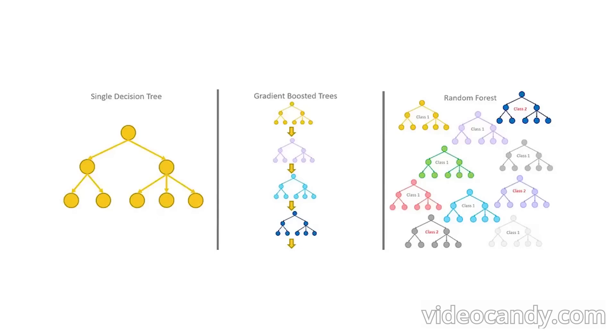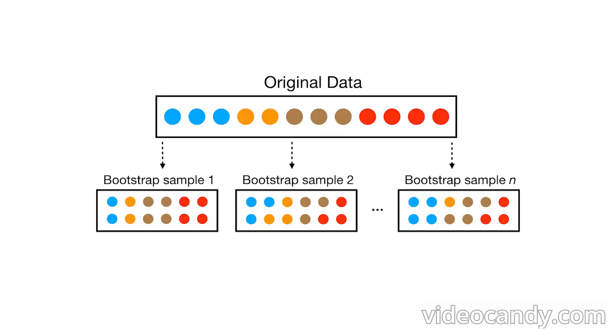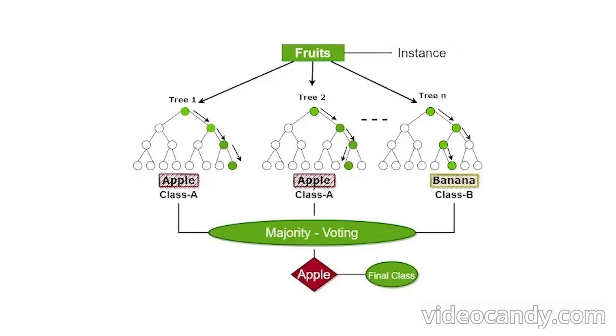Combining many simple models to a more powerful complex model is called an ensemble algorithm. One form of ensembling is bagging, where we train multiple models on different subsets of the training data using a method called bootstrapping. A famous version of this idea is called a random forest, where many decision trees vote on the classification of your data by majority vote of the different trees in the random forest.